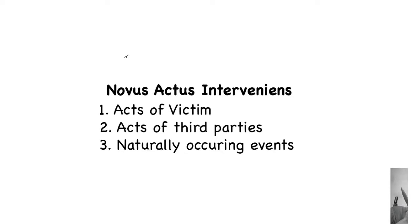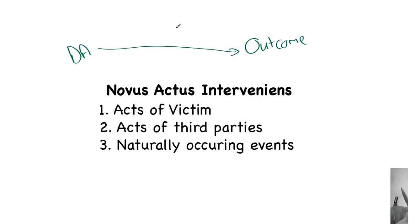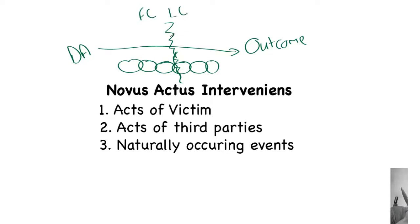Our starting premise is that sometimes the sole cause of death or injury can seem to be a completely independent act — something outside of the control of the defendant. If we remember that our equation looked at the defendant's act and the outcome, and if at any stage something happened to break the chain of causation, then the defendant wouldn't be liable. We can also break the chain by an independent intervening act, known by the Latin novus actus interveniens.